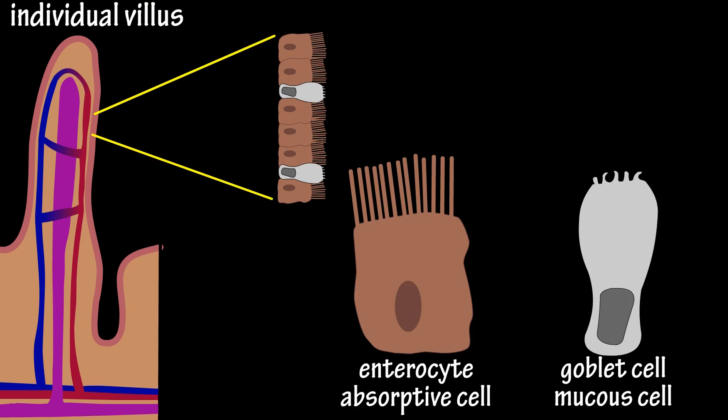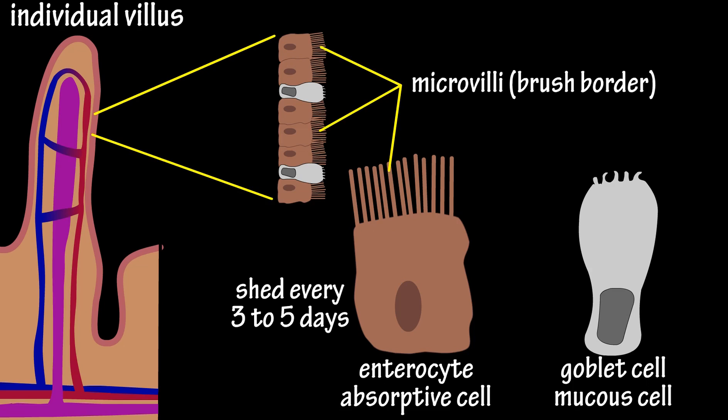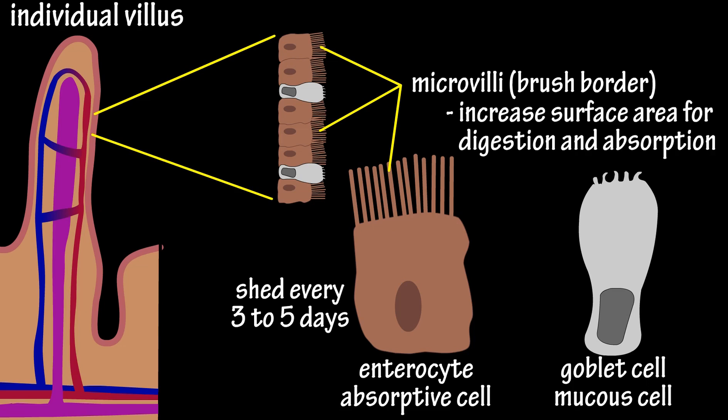The enterocyte cells have a rapid turnover as they are shed and excreted in the feces approximately every three to five days. The enterocytes have tiny hair-like projections called microvilli, also described as the brush border. This brush border contains enzymes that complete the chemical digestion or breakdown of nutrients before absorption takes place. These microvilli increase the surface area even more, providing for even greater digestion and absorption.